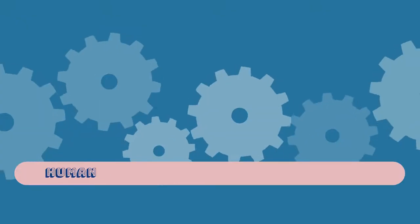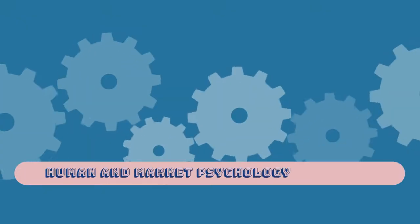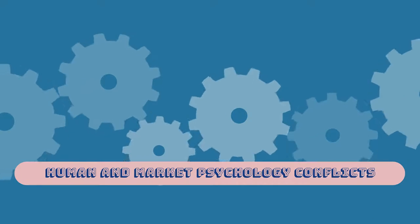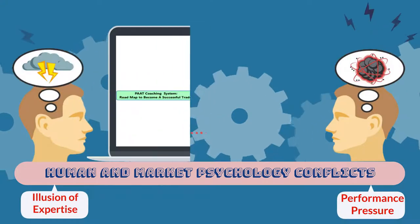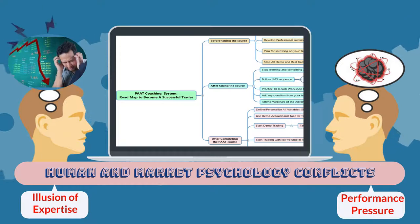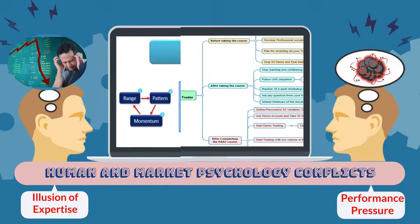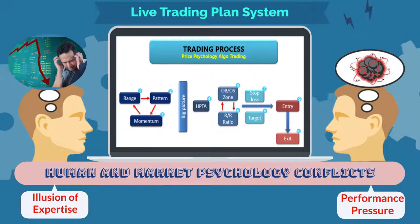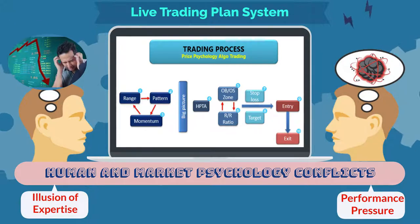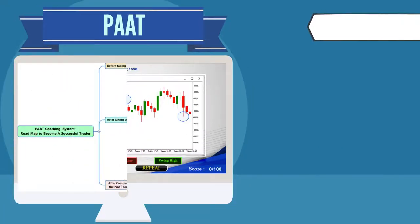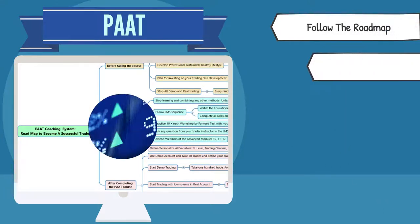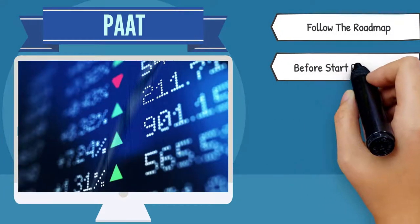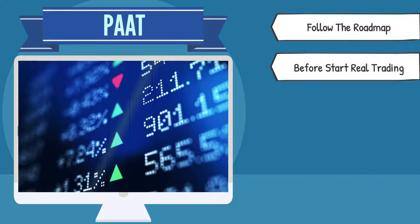To address other human and market psychology conflicts, such as performance pressure and the illusion of expertise, we have created a roadmap for success in trading that incorporates solutions for all mindset-related issues, which is included in our coaching of the live trading plan. All students need to follow this roadmap when registering in Price Action Algo trading, until they start trading in the live market in a real account.